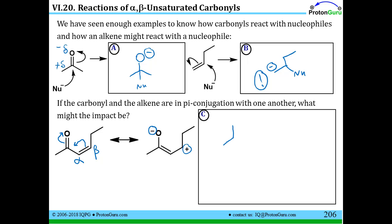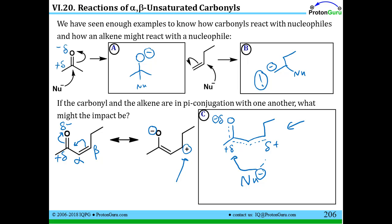Now we have an interesting case because we can draw resonance contributors by moving conjugated pi bonds around to give a minus charge on the O and a plus charge on the carbon. If I draw the resonance hybrid structure for this compound, I have some partial double bond character in all three of these positions. I have partial negative on the oxygen, partial positive on this carbon because it's part of a polar bond, and partial plus on this carbon as well because in one of the resonance contributors there's a positive charge. Now an interesting question comes up: if a nucleophile is floating by, we have two potential sites for attraction of the nucleophile.